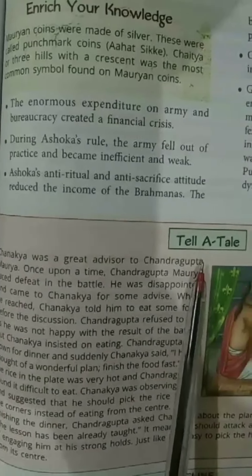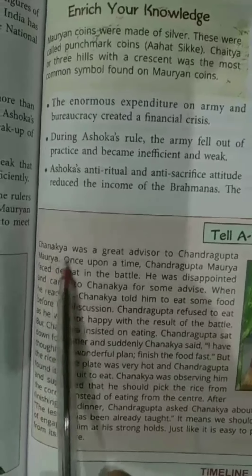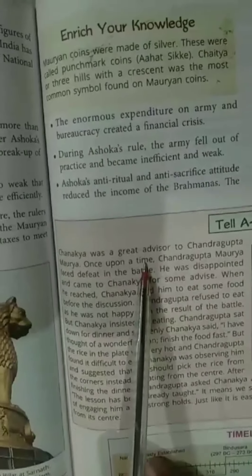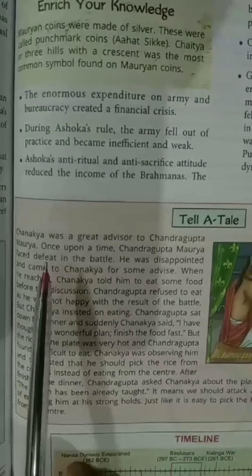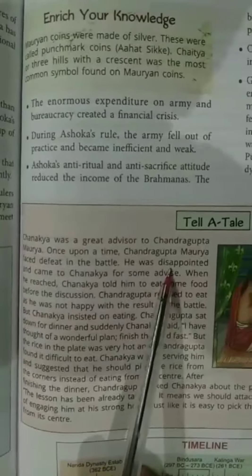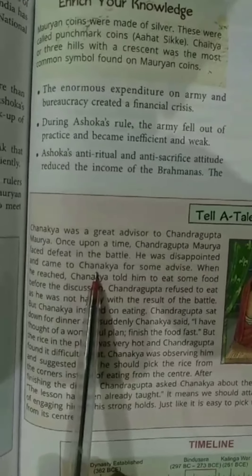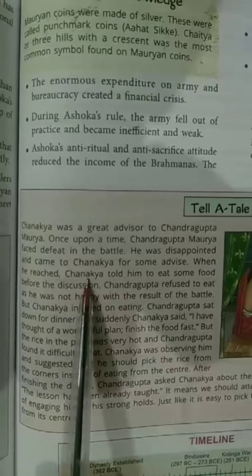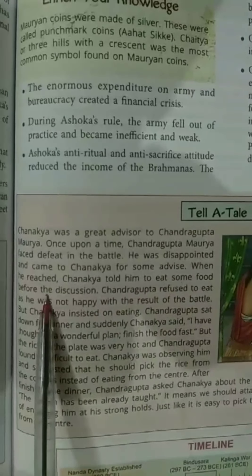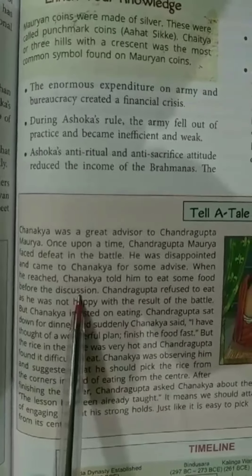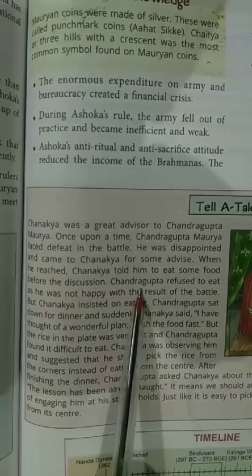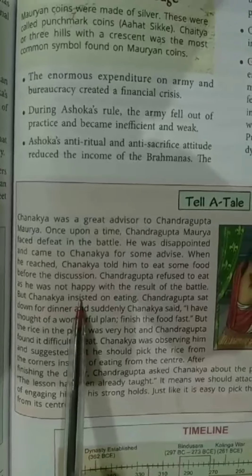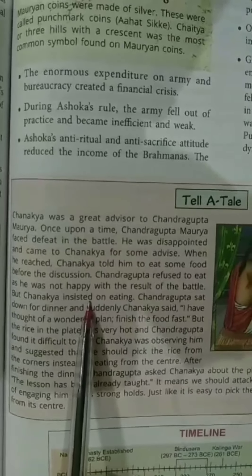Now, an interesting story about Chanakya. Chanakya was an advisor to Chandragupta Maurya. Once, Chandragupta Maurya faced a defeat in battle and became very sad. He came to meet Chanakya to seek his advice. When Chandragupta reached Chanakya, Chanakya told him to eat some food first and then they would have a discussion. Though Chandragupta refused to eat due to his upset state, Chanakya insisted he eat something first.